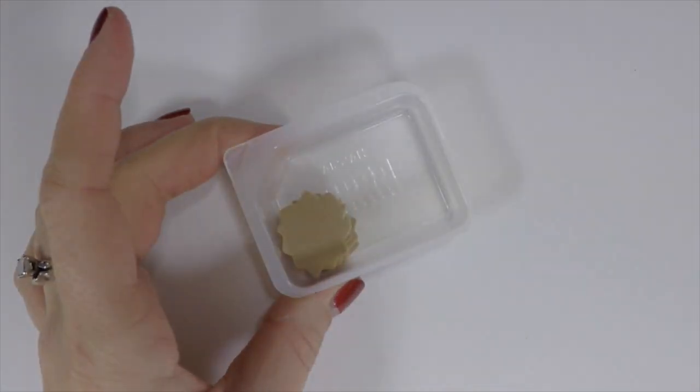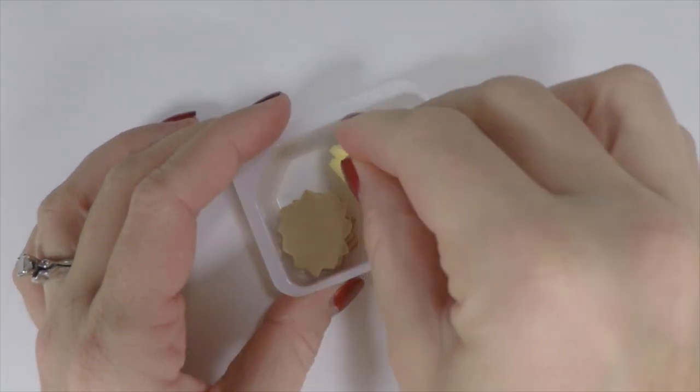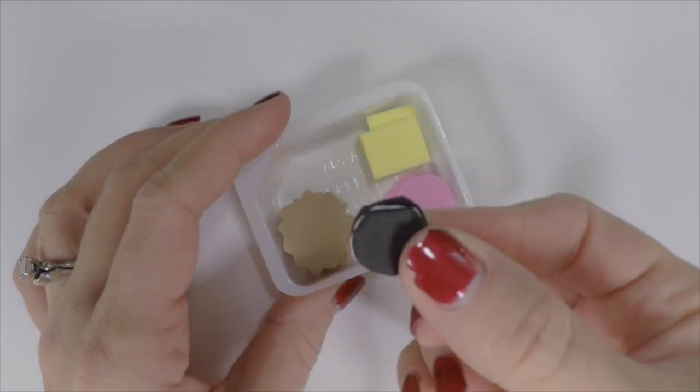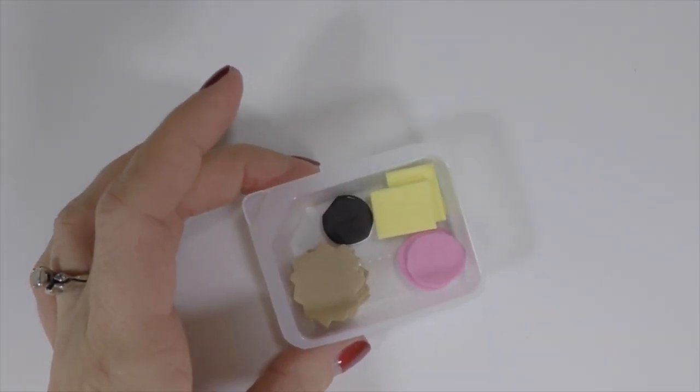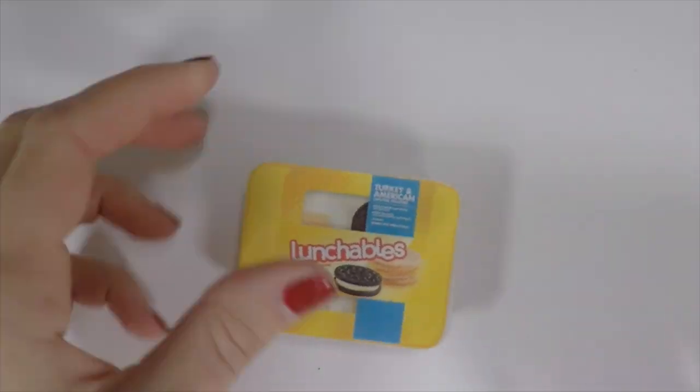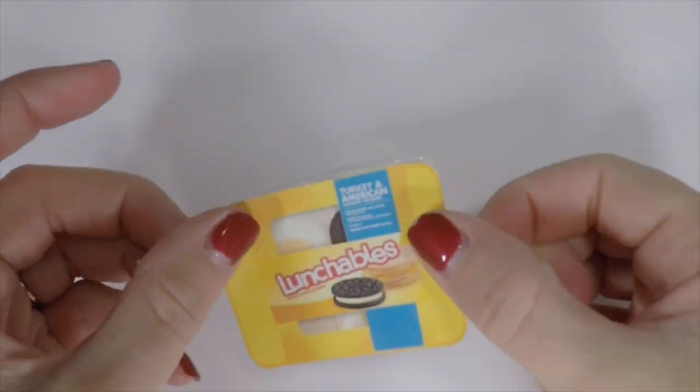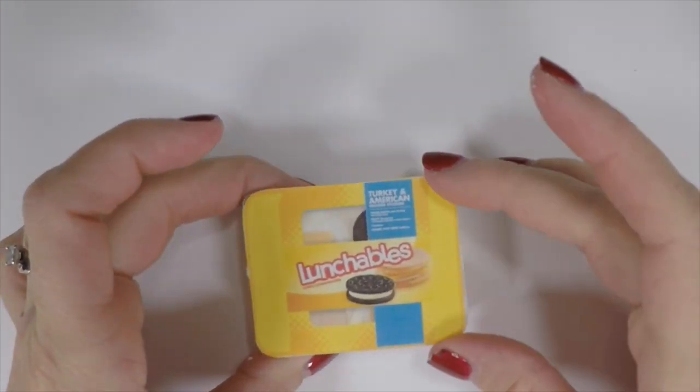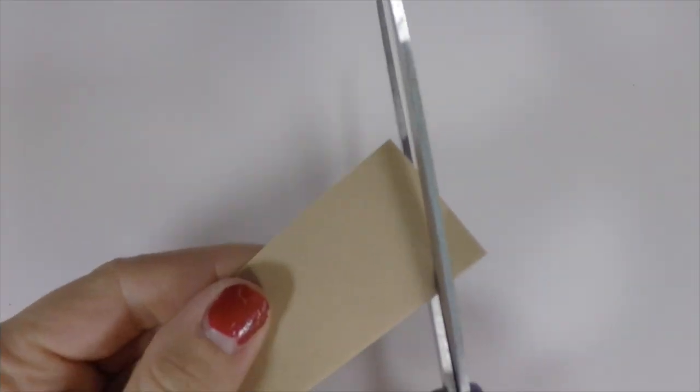Then put all the pieces in your empty condiment container. If you don't want them to move around, you can glue them in place. Then take the label that you made and glue it in place. If the label is bigger than your container, you can cut it down. If your label is smaller, you can always cover the container with yellow paper first and then put the printable on top.